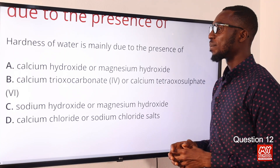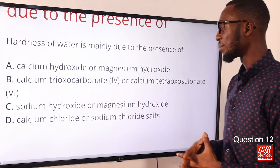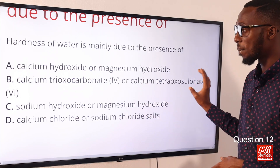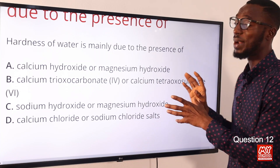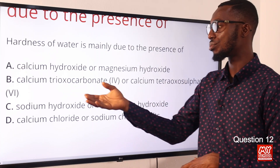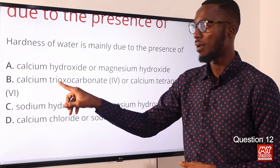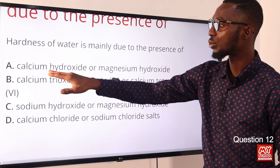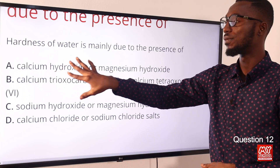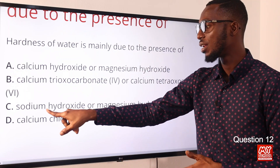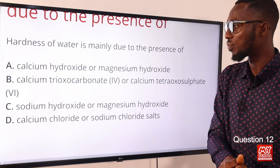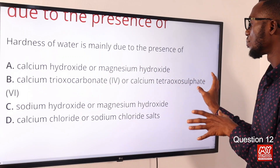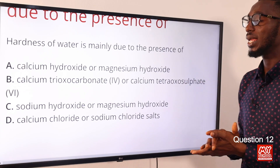Question 12: Hardness of water is mainly due to the presence of limestone. When water dissolves limestone (CaCO₃) or gypsum (CaSO₄·6H₂O), it becomes hard. Water containing CO₂ can dissolve these minerals. Calcium hydroxide (slaked lime) removes temporary hardness; sodium hydroxide (caustic soda) removes permanent hardness. Hardness is mainly due to the presence of limestone CaCO₃ or calcium sulfate gypsum. The correct option is option B.